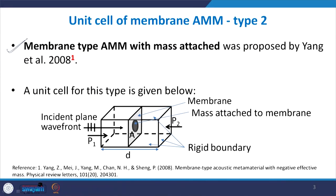To quickly review: this membrane-type acoustic metamaterial has a stretched membrane with a mass attached on top, all clamped inside a waveguide. This unit cell was proposed by Yang et al. 2008. You have a sub-wavelength waveguide with a stretched membrane and attached mass clamped inside. These unit cells are usually connected in series as part of a long waveguide.